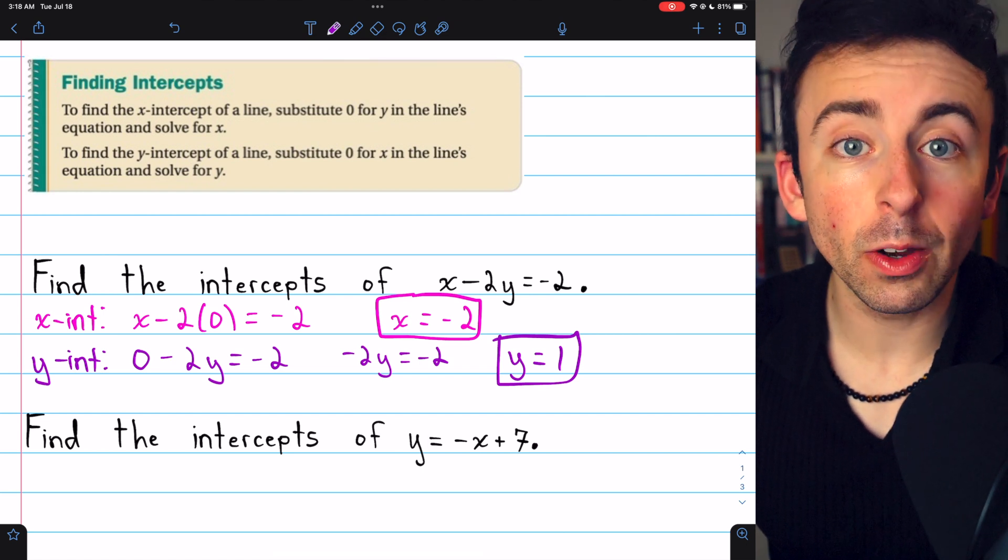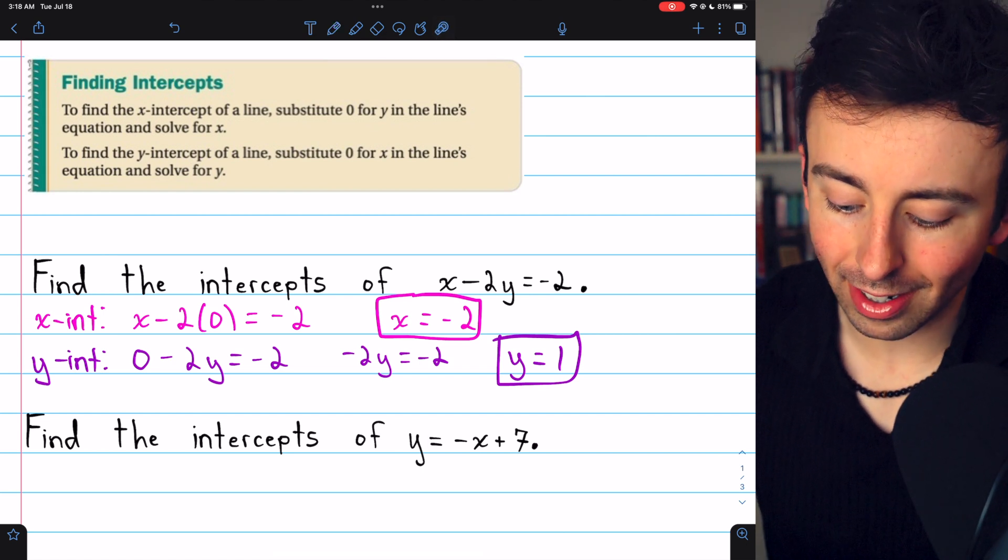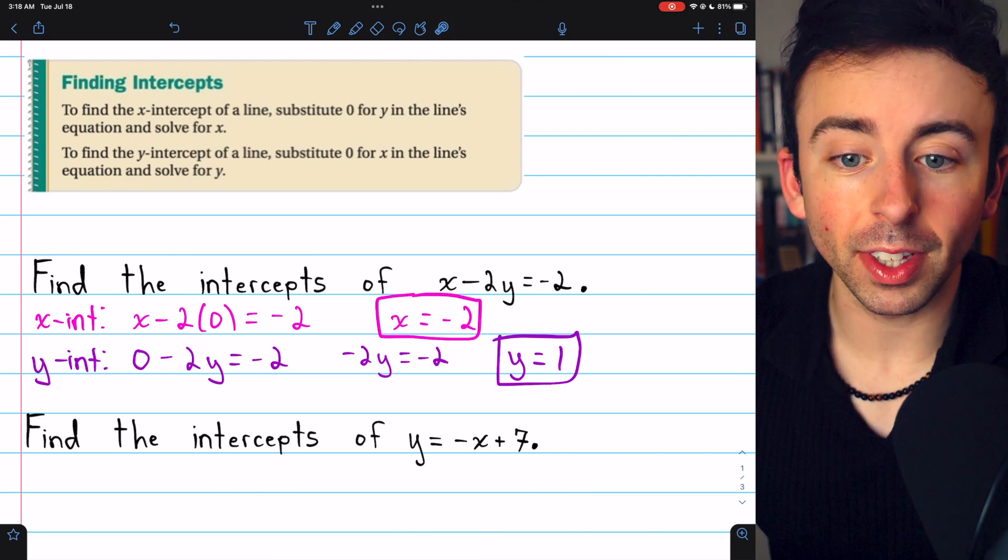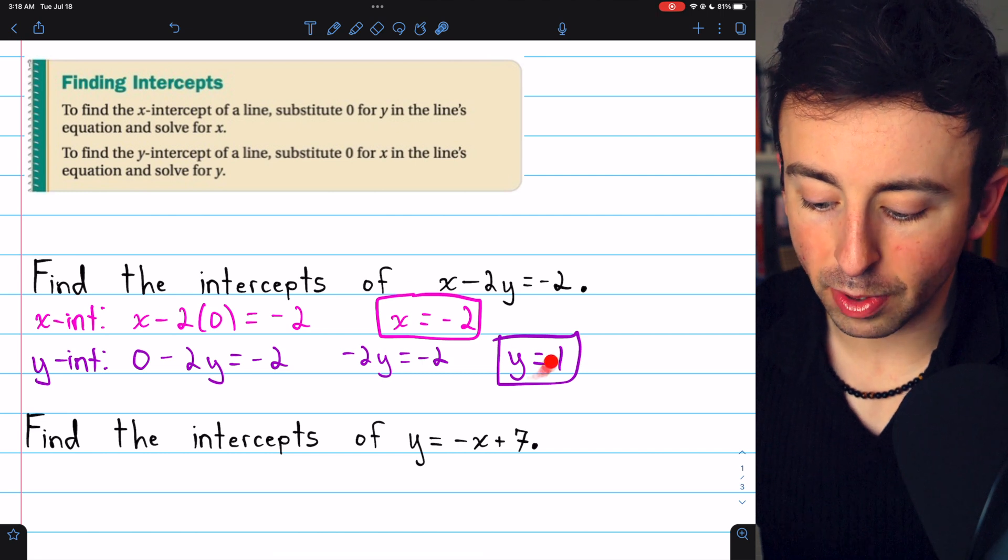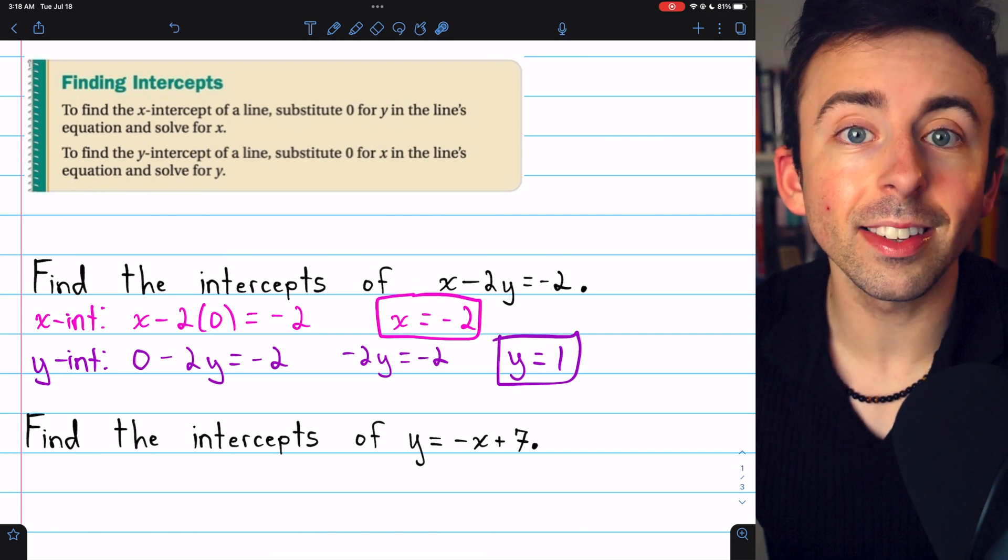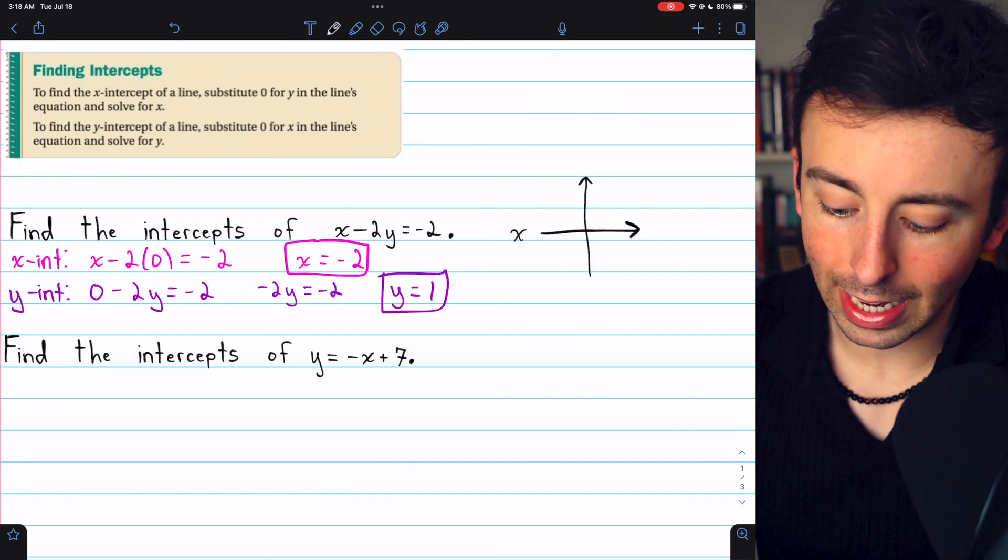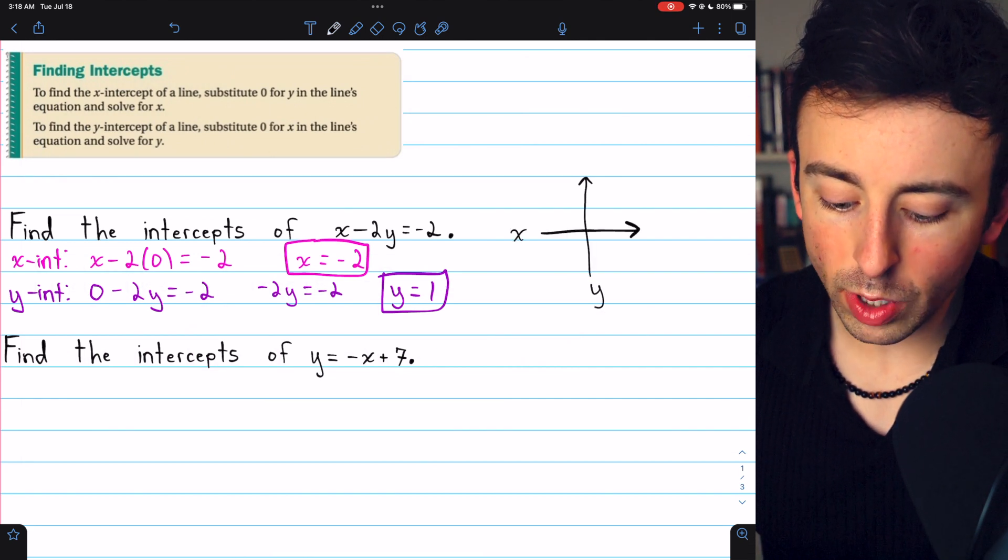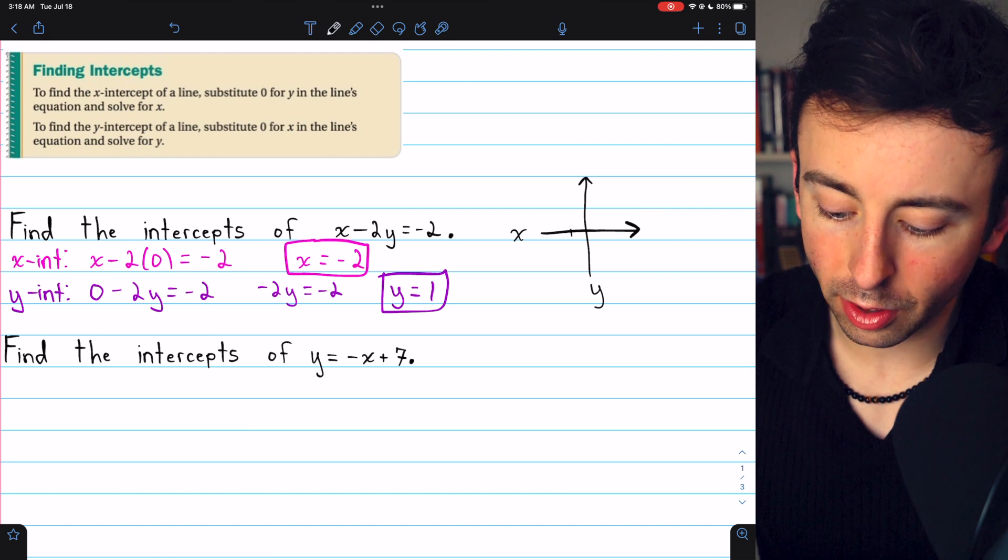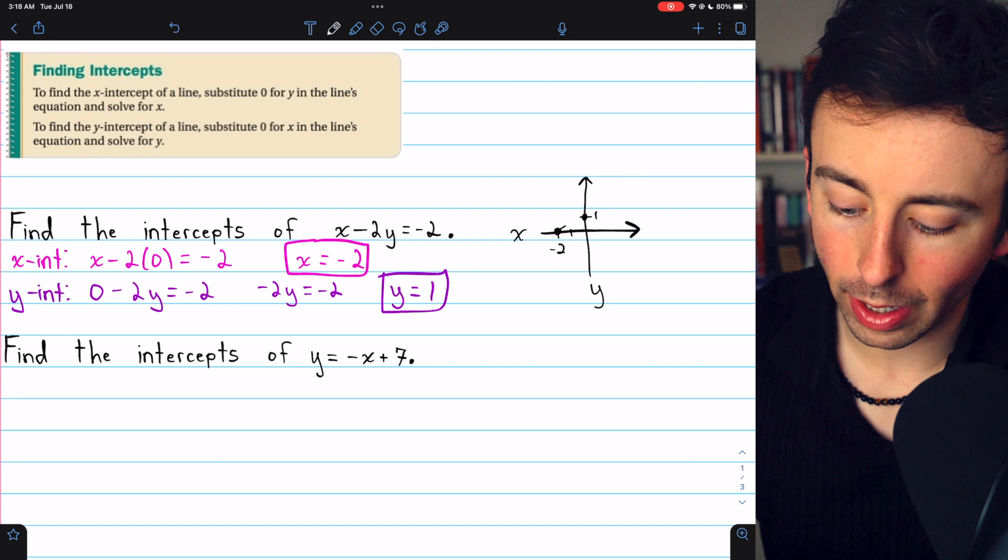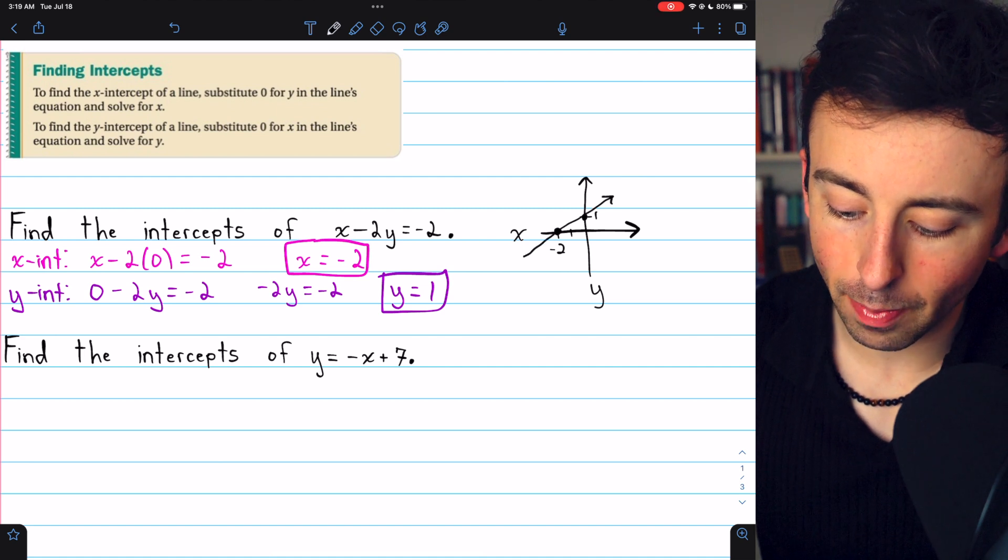If we were to graph the line, it would pass through the y-axis at y equals 1. With this information, we can actually graph the line because the x-intercept and y-intercept are two points that are on the line. I'll just do a really quick sketch here. There's our x and our y-axis. We know the x-intercept is negative 2, so at x equals negative 2, we have a point, and the y-intercept is 1, so at positive 1 on the y-axis, we have a point, and the line then would look something like that. Really rough sketch.